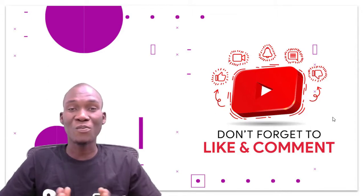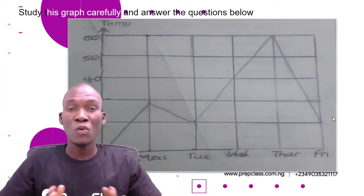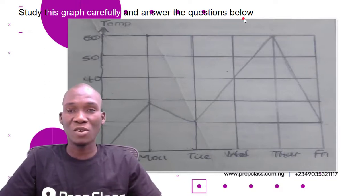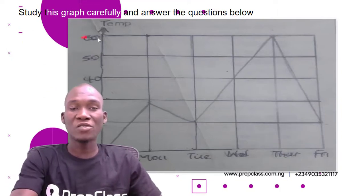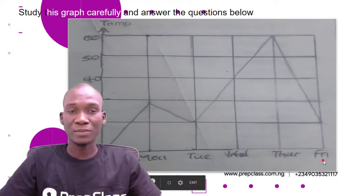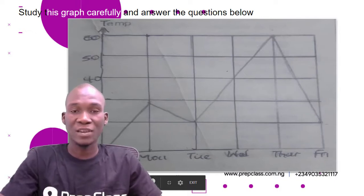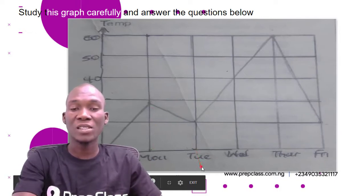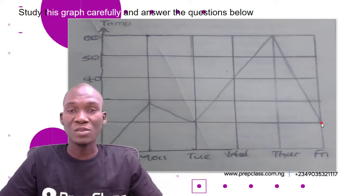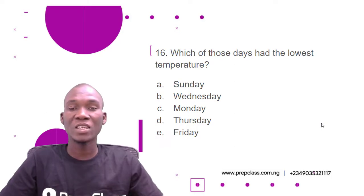Let's begin today's work as we solve more questions from Yugo Sugo mathematics past questions. We have a graph — study this graph carefully and answer the questions below. On the vertical axis we have temperature, and on the horizontal axis we have days of the week. Sunday has a temperature of 10, Monday 30, Tuesday 20, Wednesday 40, Thursday 60, and Friday 20.